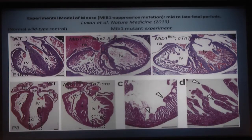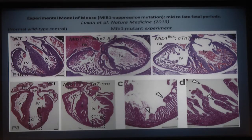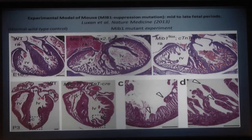MIB1 mutation is found in several families with non-compaction cardiomyopathy in humans, making it a very interesting model that was tested with four different experimental approaches. The normal wild-type mouse control is compared to the non-compacted left ventricular result of inducing a MIB1 mutation — a heart that is quite different in cross-section. The inter-trabecular spaces eventually give rise to vessels — intramyocardial vessels.